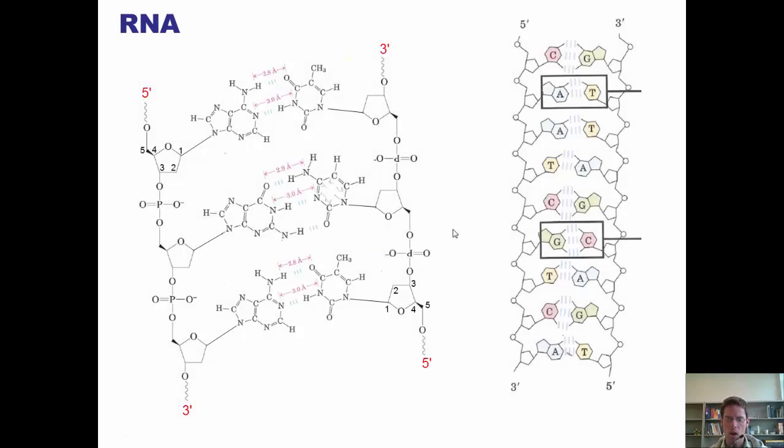Now, structurally speaking, RNA, which is short for ribonucleic acid, looks very much like DNA with two major differences. First of all, RNA has hydroxyl groups, these OH groups, at the C2 position of each ribose sugar in its backbone.